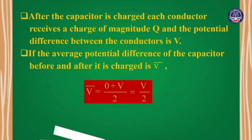As charging proceeds, the potential difference between the two plates adjusts and increases over time. Before charging begins the potential difference is zero, and after charging it reaches the final value V.